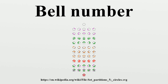The five partitions of {A, B, C} are: {A}, {B}, {C}; then {A,B}, {C}; then {B}, {A,C}; then {C}, {A,B}; and finally {A,B,C}. B0 is 1 because there is exactly one partition of the empty set. Every member of the empty set is a non-empty set, and their union is the empty set, so the empty set is the only partition of itself.